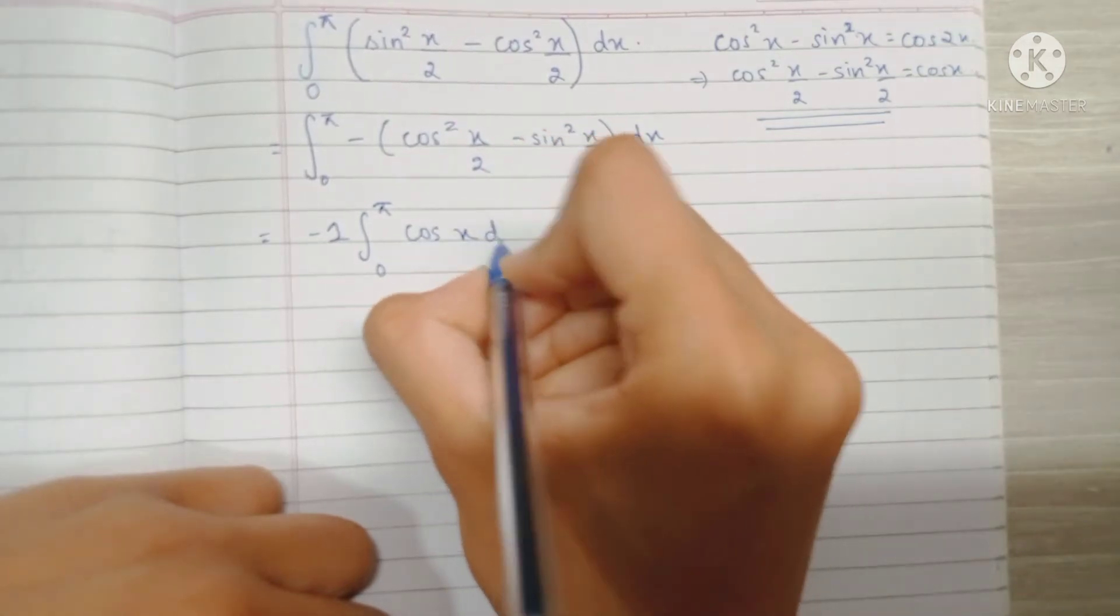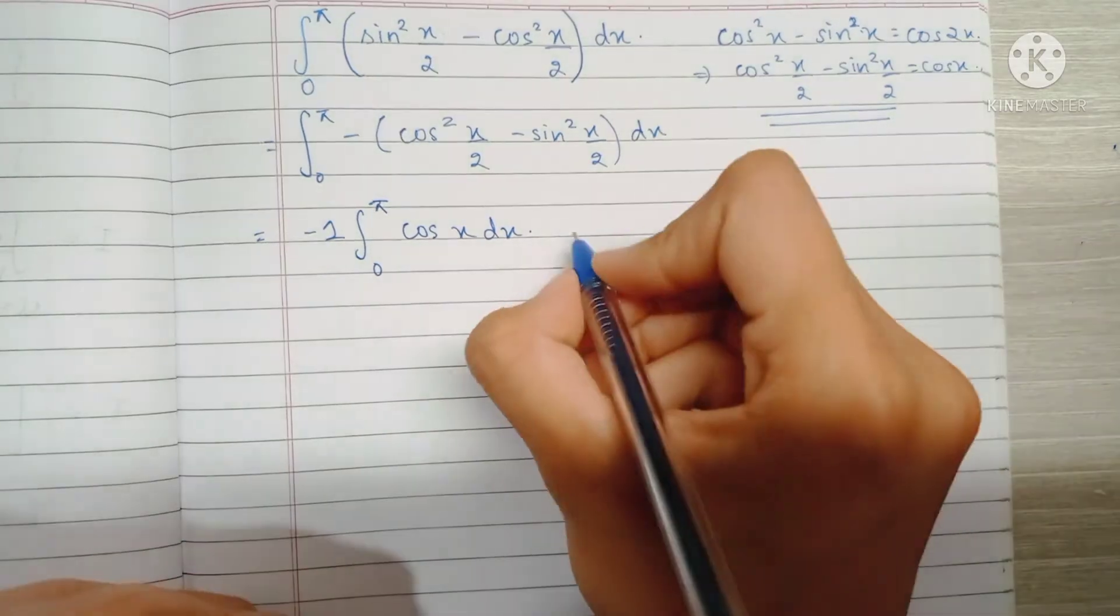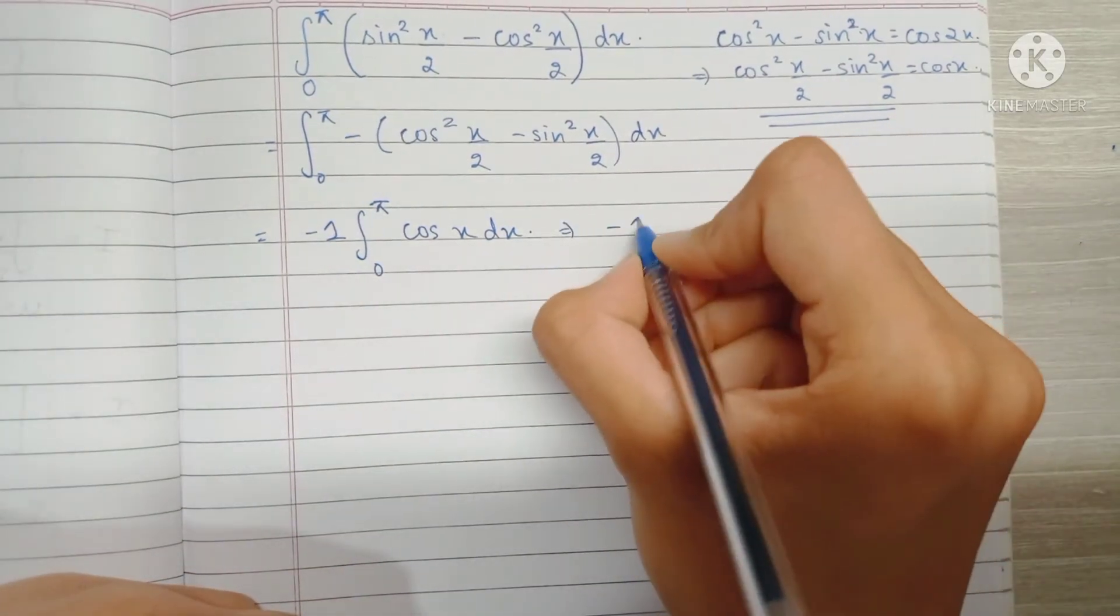Now the integration of cos x is sine x. So this implies that we have minus 1 times sine x, which we have to evaluate from 0 to pi.